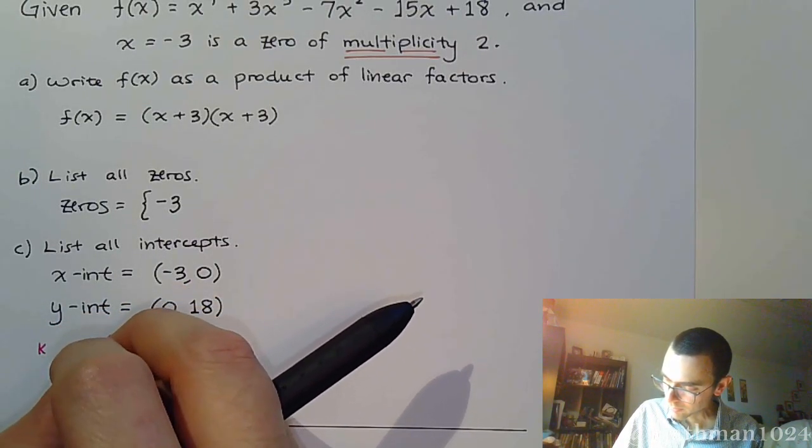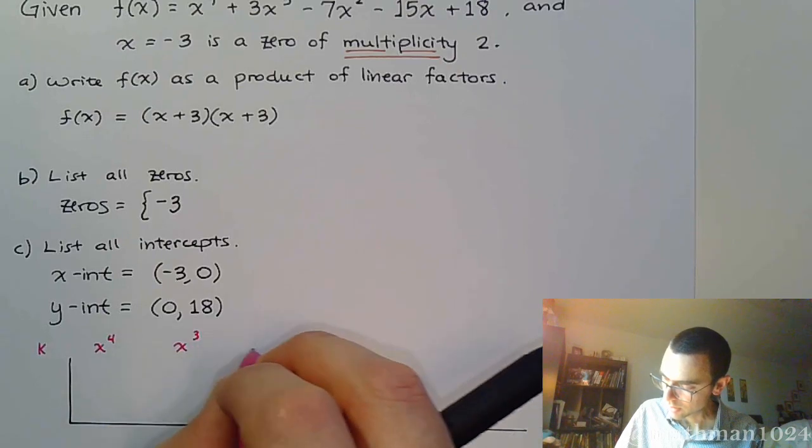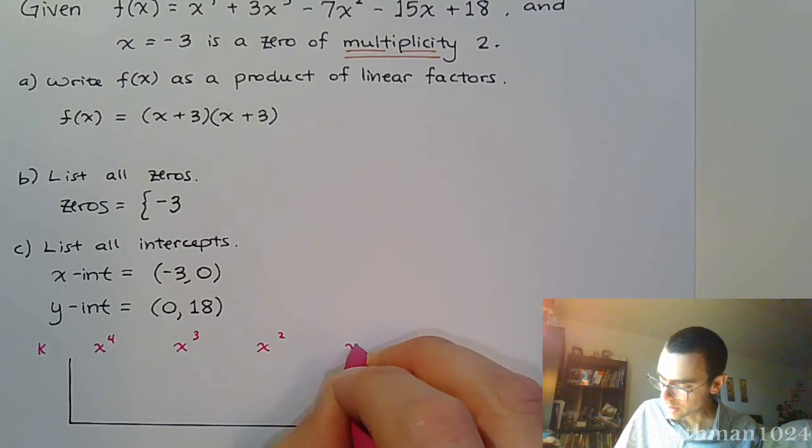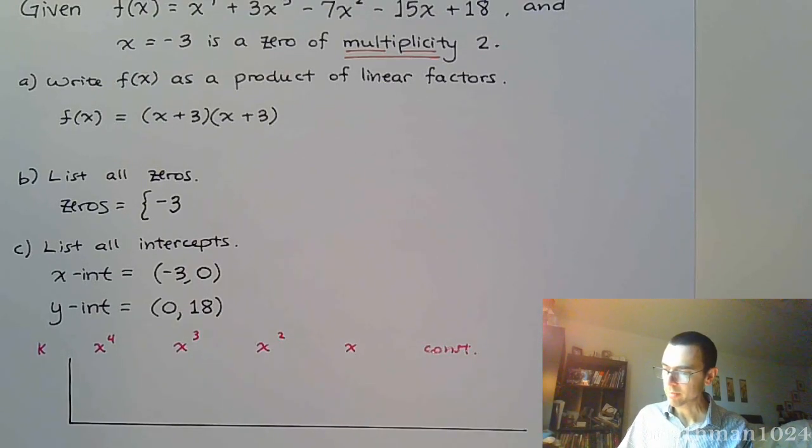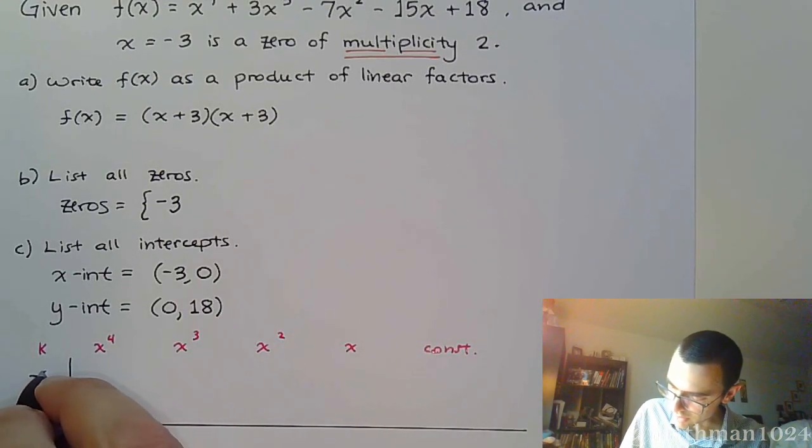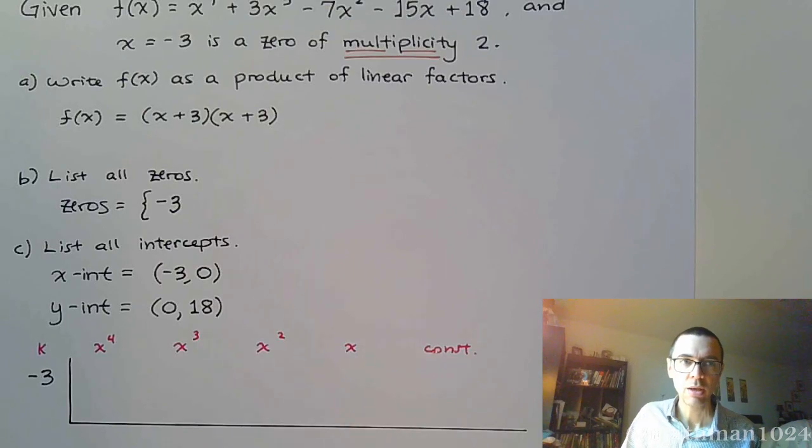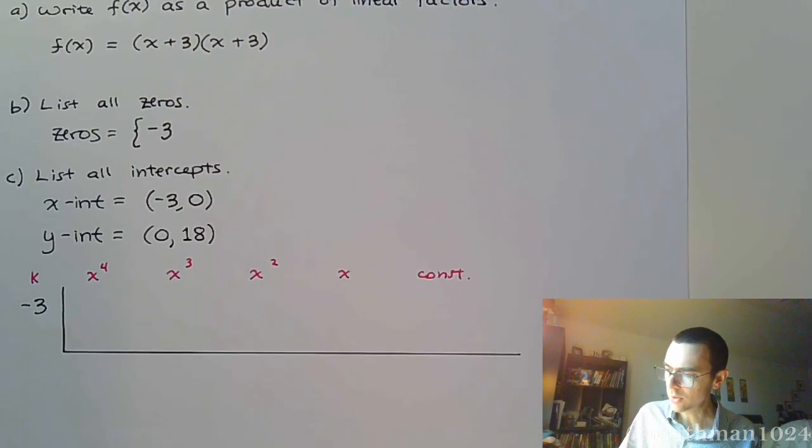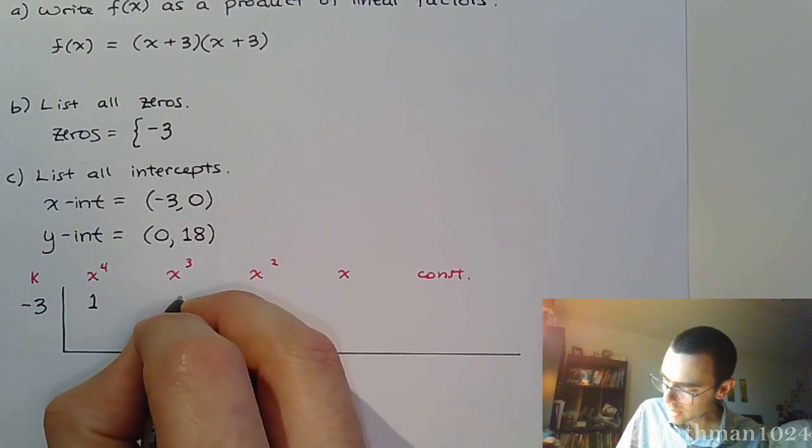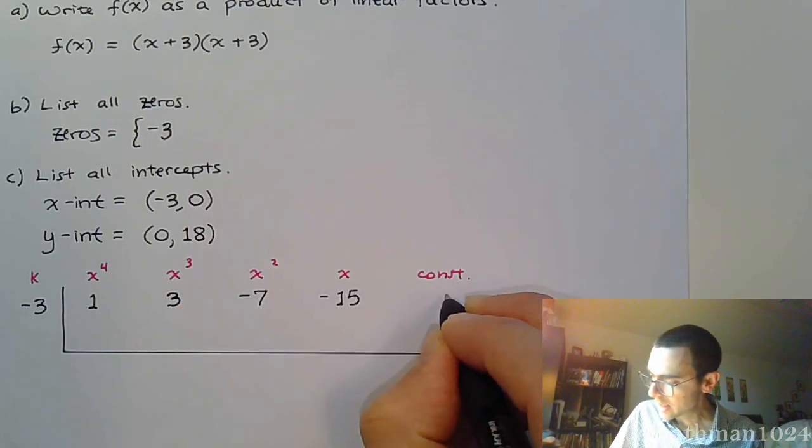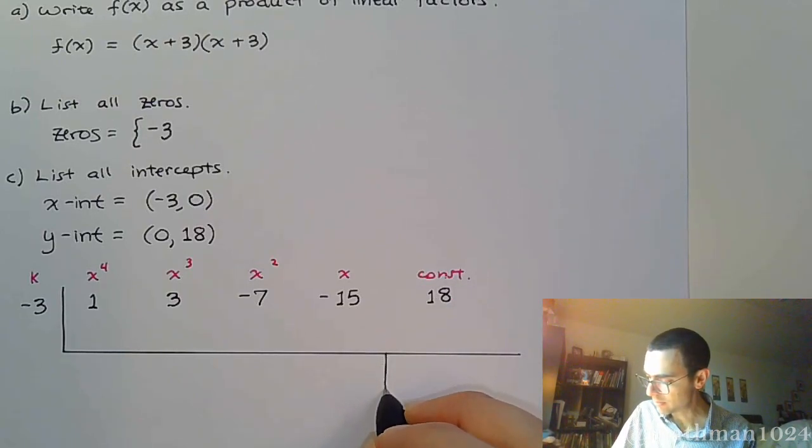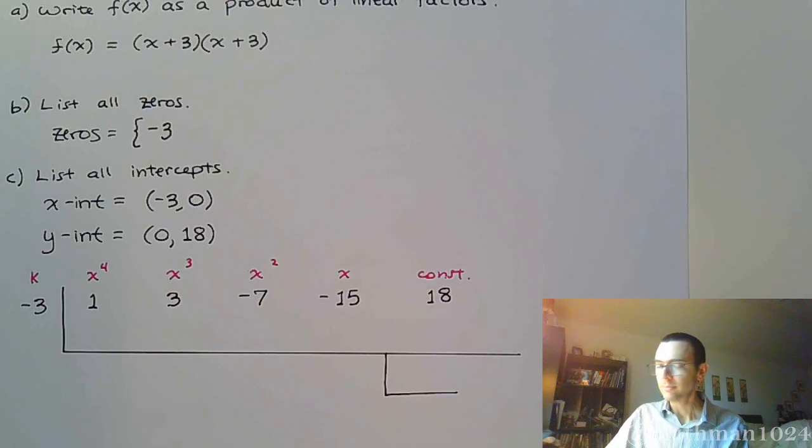So there's k, x to the four, three, two, one, and then my constant. So I'm going to use negative three for my k value. x to the fourth, the coefficients here are one, three, negative seven, negative fifteen, and positive eighteen.